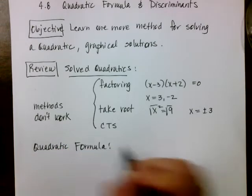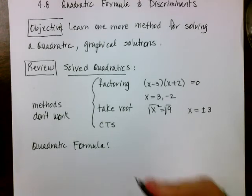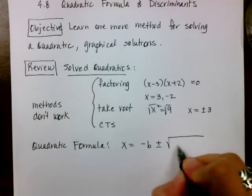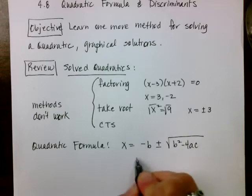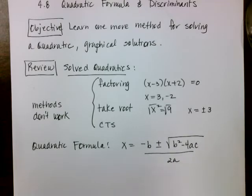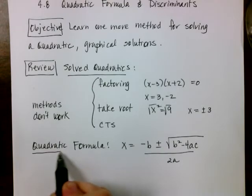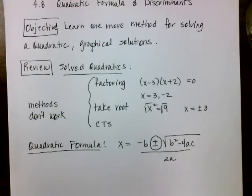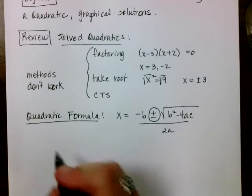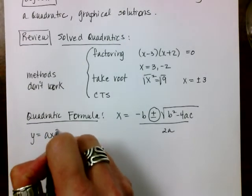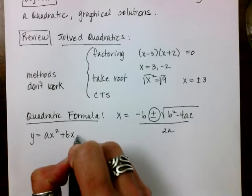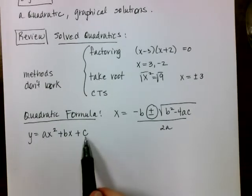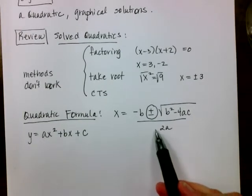I'm sure you've seen it before, but the quadratic formula is: x equals negative b plus or minus the square root of b squared minus 4ac, all over 2a. If we have a quadratic, there should be two solutions, generated by the plus and the minus. A quadratic in standard form is y equals ax squared plus bx plus c, and a, b, and c are the values that get substituted into the formula.